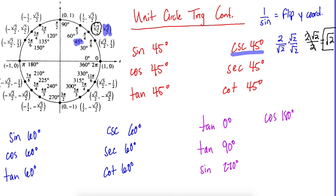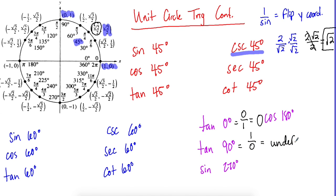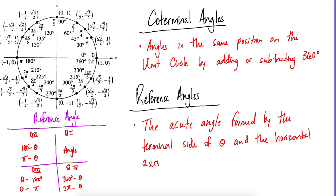Let's look at zero degrees — tangent is y over x, which is 0/1, so tangent 0 equals zero. At 90 degrees, tangent 90 is 1/0, which is undefined because we can't divide by zero. Practice the rest on your own, making sure to rationalize your denominator and simplify properly.